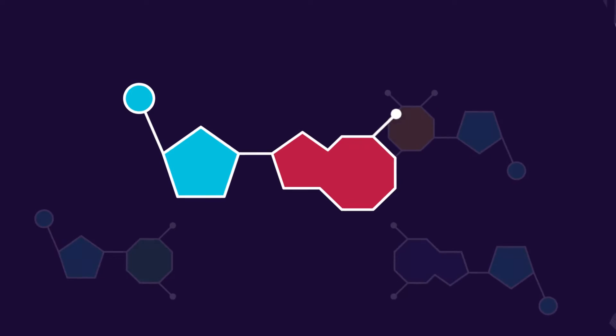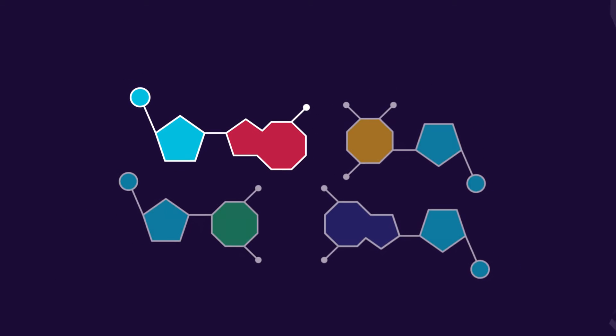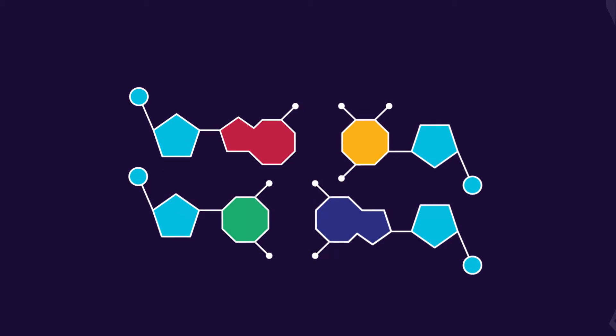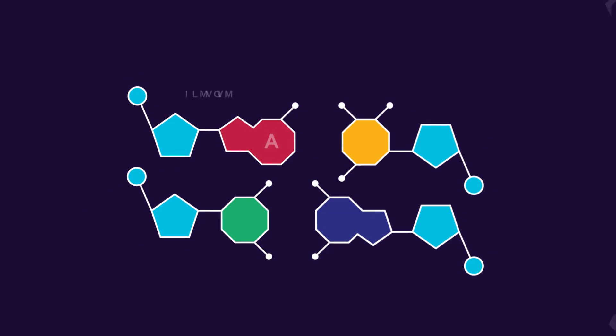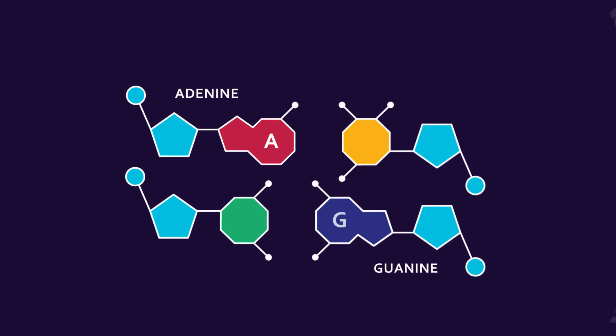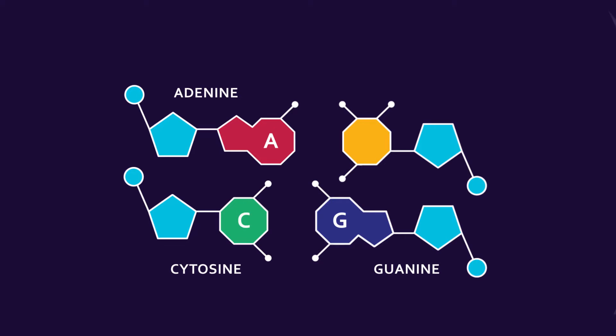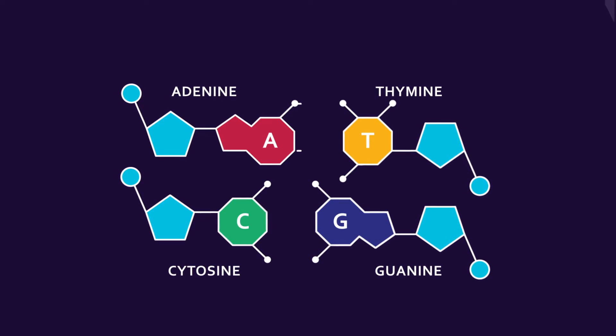The nitrogenous bases are of four different types: adenine, guanine, cytosine, and thymine.